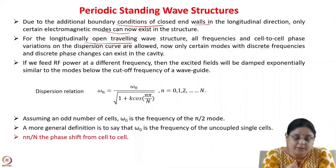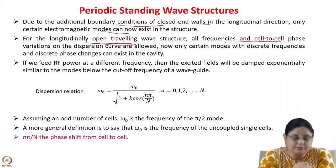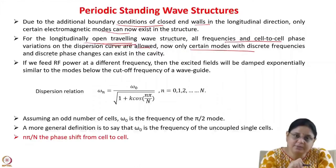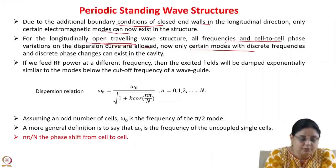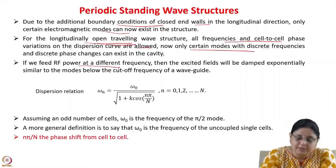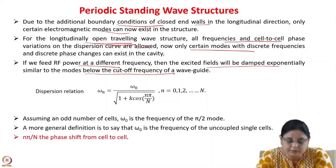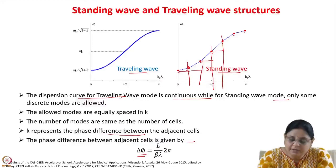For the longitudinally open traveling wave structure, all frequencies and cell-to-cell phase variations on the dispersion curve are allowed — in other words, the dispersion curve is continuous. In the cavity, only certain modes with discrete frequencies and discrete phase changes will exist. So if you feed RF power at a different frequency, the excited fields will be damped exponentially, similar to modes below the cutoff frequency of a waveguide. You have to feed in the power at these discrete frequencies only.